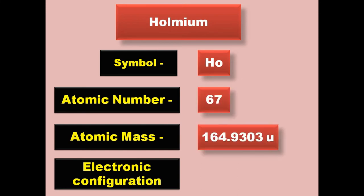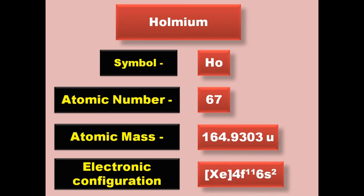Holmium has symbol Ho, atomic number 67, atomic mass 164.9303, electronic configuration [Xe] 4f11 6s2. Holmium is a lanthanide and exists in solid form at room temperature.